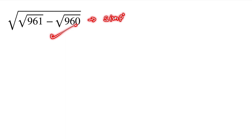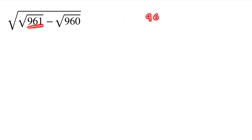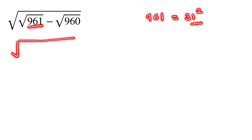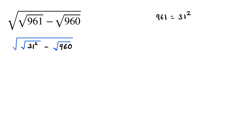So 961 can be written as 31 to the power 2. So here we write under root of under root 31 squared minus under root 960. Now 960 can be written as 4 into 4 into 240.